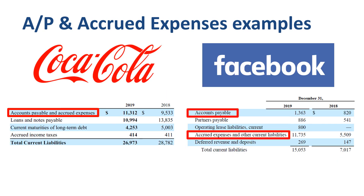Accounts payable and accrued liabilities are important elements of current liabilities. The amount and nature of the balances are highly dependent on the business operations of the company year over year. Some balances are incidental, one-off; others are recurring. They often tell an interesting story of what is happening at the company.